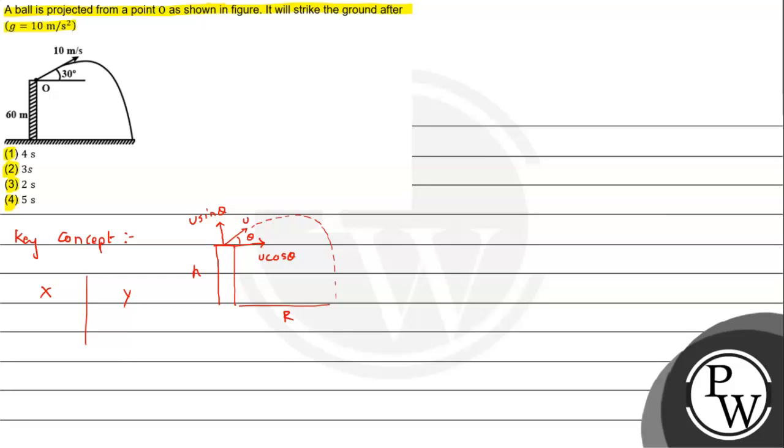Along x, the speed is u cos theta, and along y the speed is u sin theta. We need to understand that along x there is no acceleration acting on the particle, so its speed throughout will remain the same along the horizontal journey.